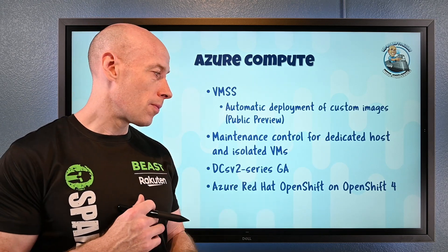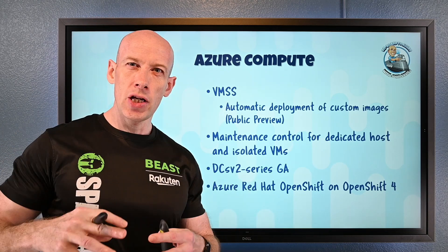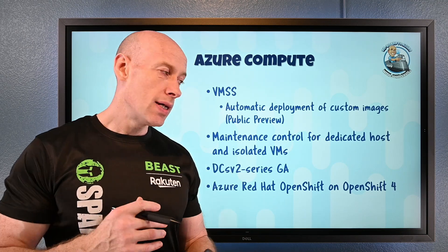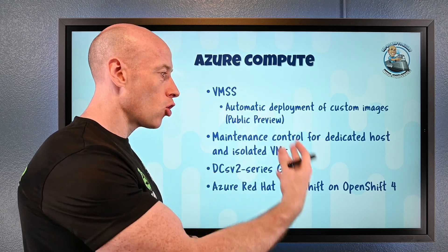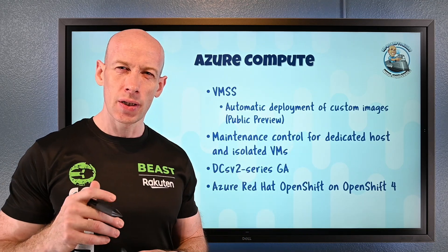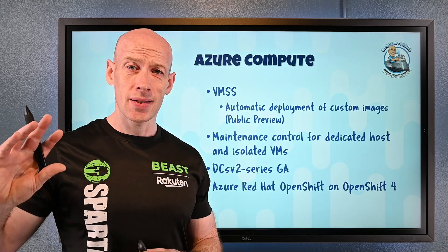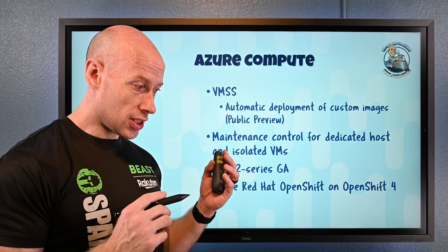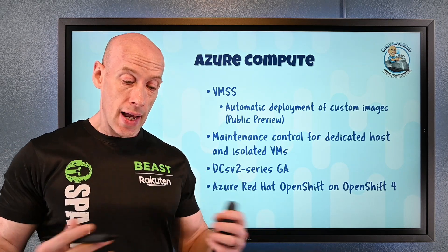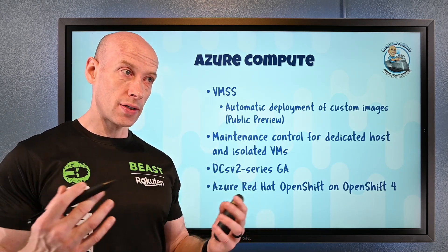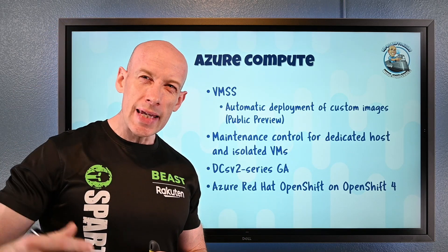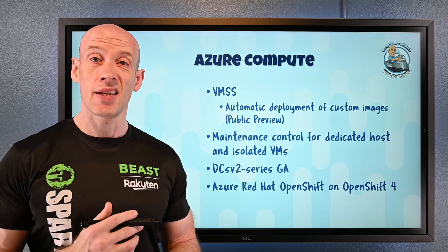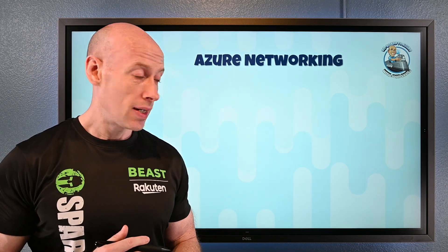Azure Red Hat OpenShift on OpenShift v4 — this is a collaboration between Microsoft and Red Hat, co-developed and now bringing OpenShift in a managed fashion to Azure. You can create a cluster in minutes without managing any virtual machines, using Kubernetes 1.6, bring your own virtual networks, and have full cluster administration roles.